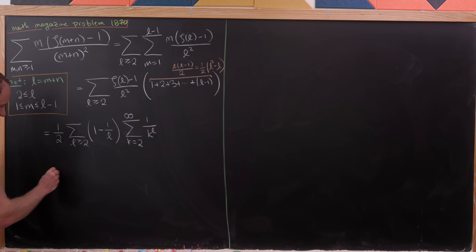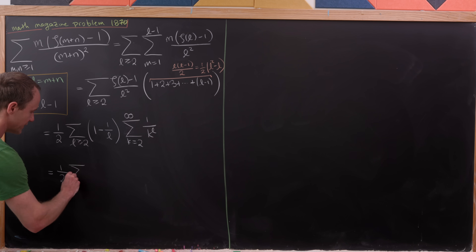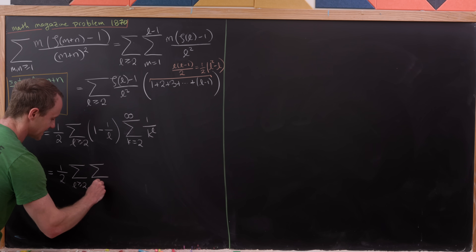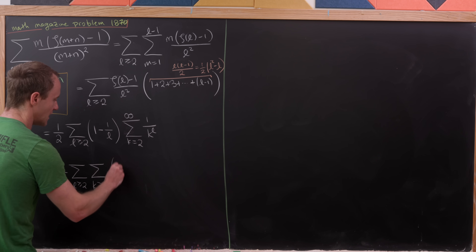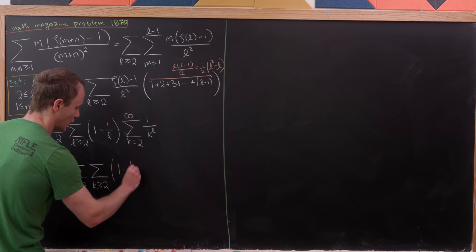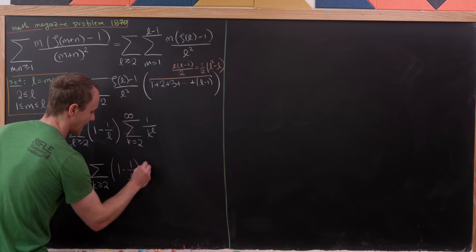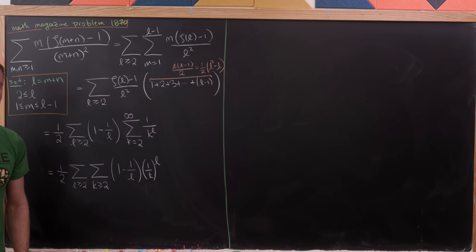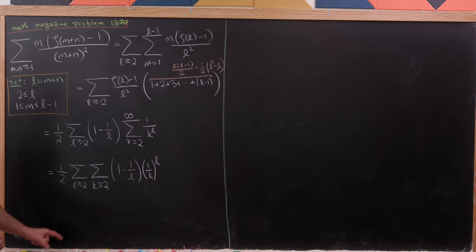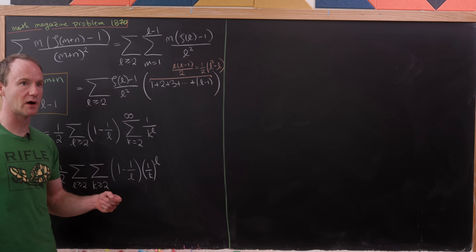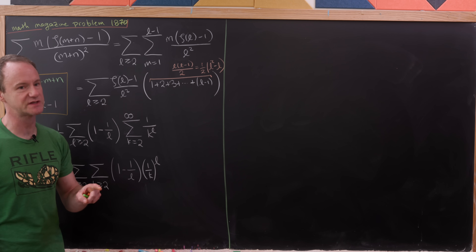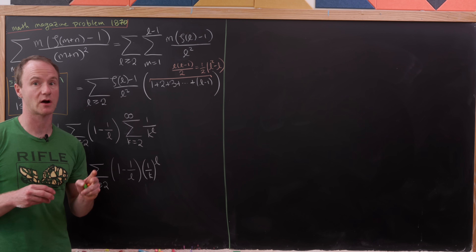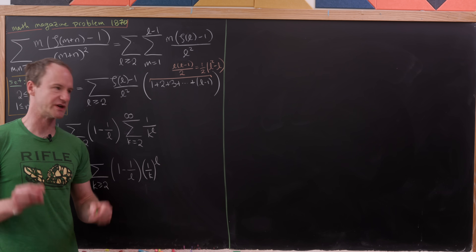So we've got one half times the sum as l is bigger than or equal to 2, and the sum as k is also bigger than or equal to 2, of 1 minus 1 over l times 1 over k to the l. Next, we'll change the order of summation, which we can do because the Taylor series here are absolutely convergent in the region we're working.